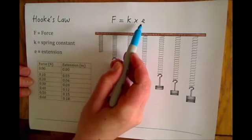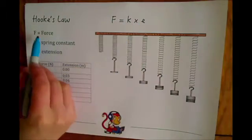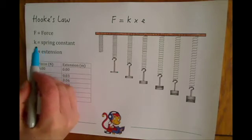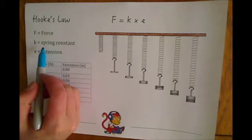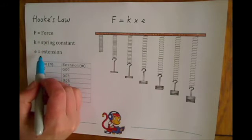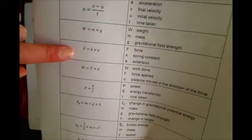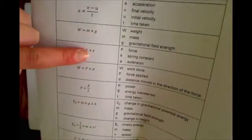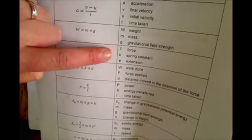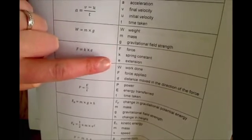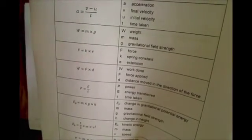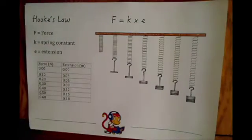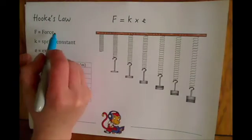The equation is F equals k times e, where F equals force, k equals something called the spring constant, and e equals extension. You'll get this equation on your equation sheet, and they remind you what each of the letters stand for. What they don't give you are the units, which we need to remember, so we'll go through the units now.